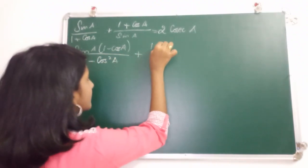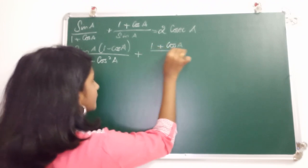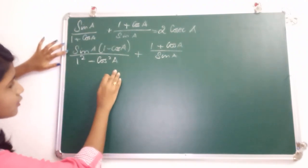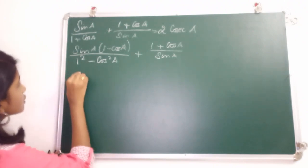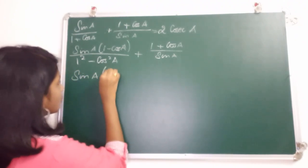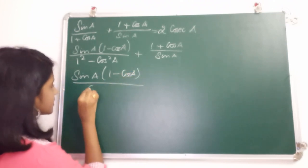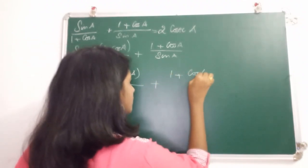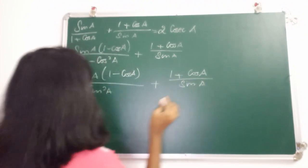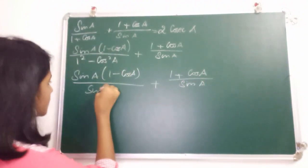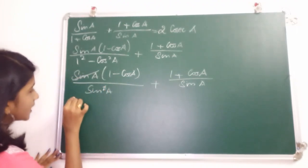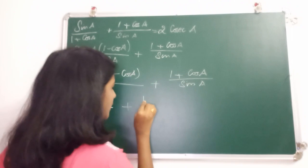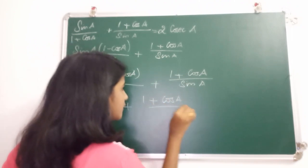We know that 1 minus cos²A equals sin²A. So the first term becomes sin A into (1 minus cos A) divided by sin²A, plus (1 + cos A) divided by sin A. We can cancel one sin A from the numerator with one from the denominator, giving us (1 minus cos A) divided by sin A plus (1 + cos A) divided by sin A.